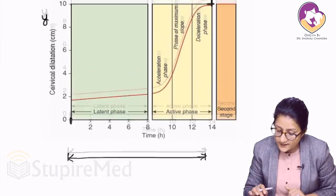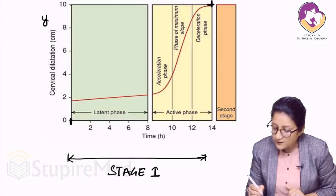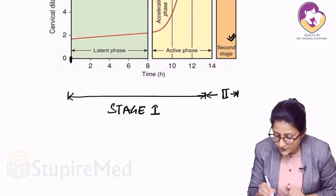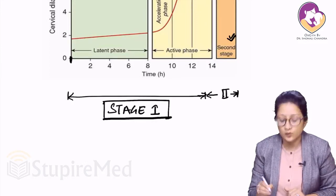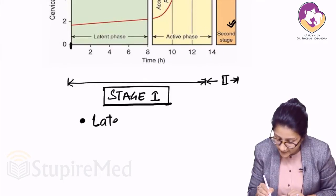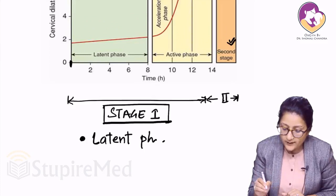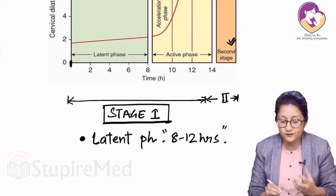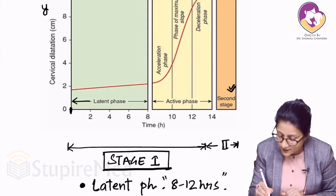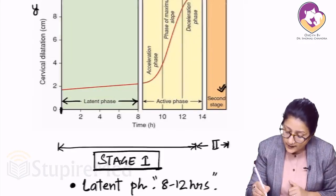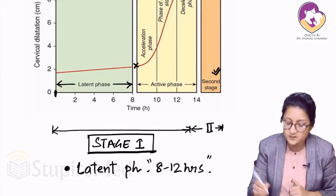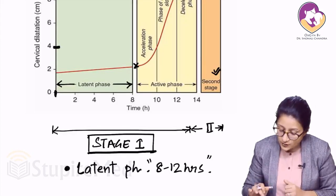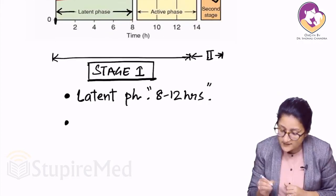The first stage of labor is subdivided into two phases. The first is the latent phase — a slower phase with an average duration of eight to twelve hours, going from zero to about three centimeters dilatation according to Friedman's original description. However, the WHO in its modified partogram says four centimeters is the cutoff for the active phase.